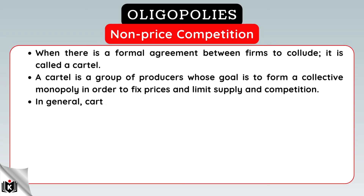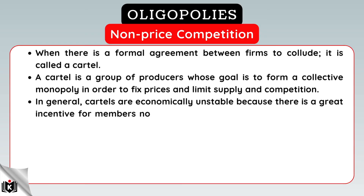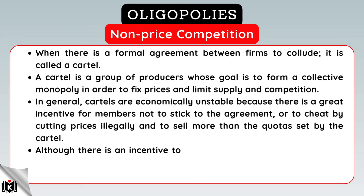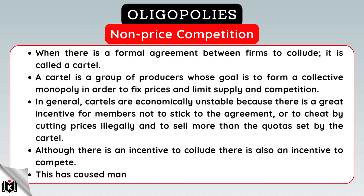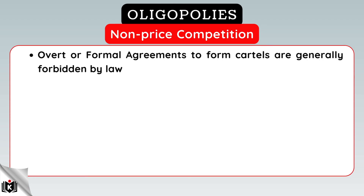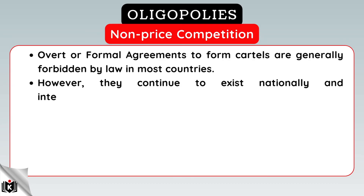In general, cartels are economically unstable because there is a great incentive for members not to stick to the agreement, or to cheat by cutting prices illegally and selling more than the quotas set by the cartel. Although there is an incentive to collude, there is also an incentive to compete. This has caused many cartels to be unsuccessful in the long term. Overt or formal agreements to form cartels are generally forbidden by law in most countries; however, they continue to exist nationally and internationally.